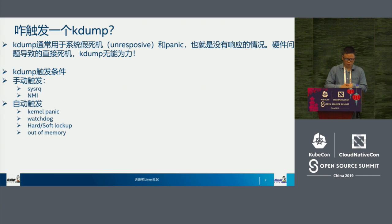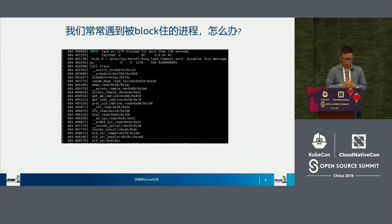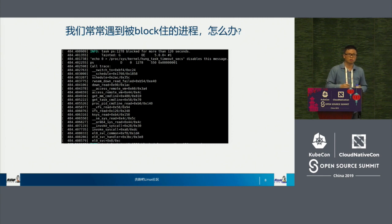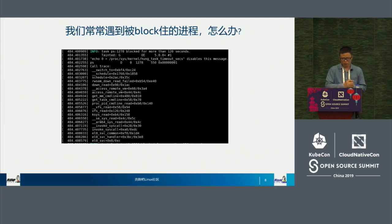How can we provoke it? We have multiple ways — manually, or automatically via kernel panic watchdog, softlockup, or out-of-memory events. If whatever system is blocked with a call trace for 120 seconds, it's probably a deadlock or something similar. If you're using kdump, you can better solve this problem and know who holds the lock and who is waiting on it.